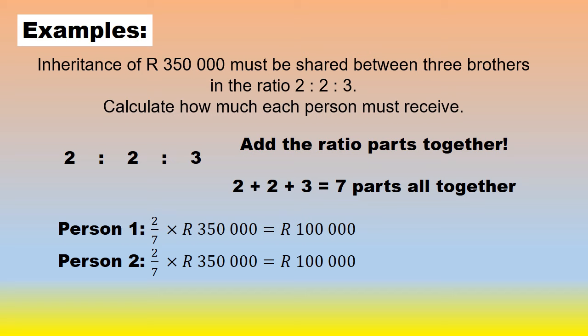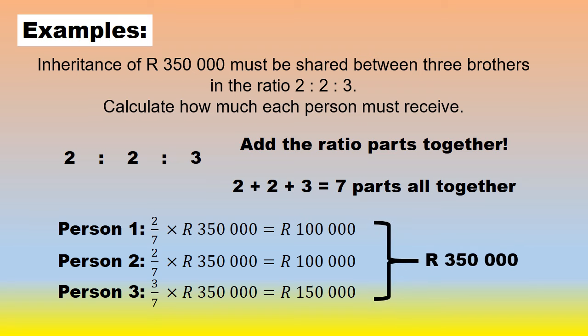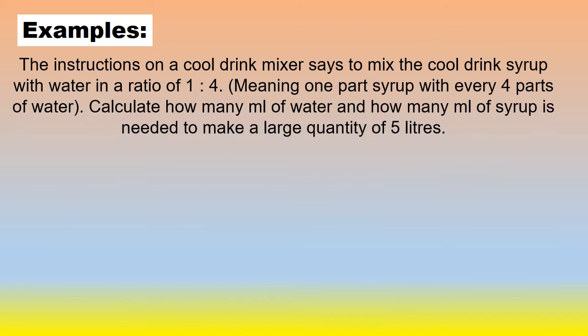Same with person 2, he also got 2 parts. 2 parts out of the total 7 parts also gave you 100,000. Person 3, maybe he was the favorite, so he got 3 parts. 3 out of the 7 times the 350,000 gives you 150,000. At the end, what you can do to just make sure is add all your answers together and it should give you the total part of inheritance again of 350,000.